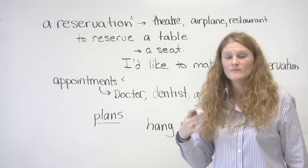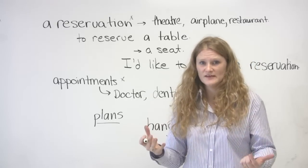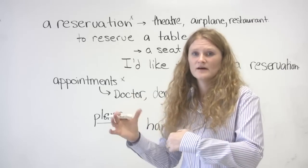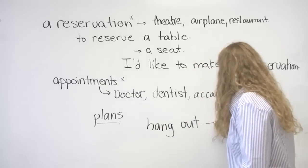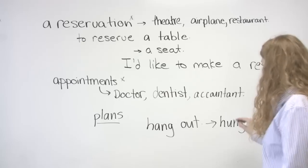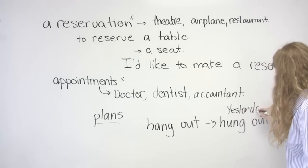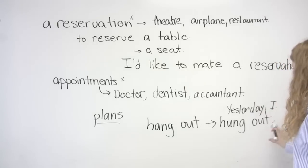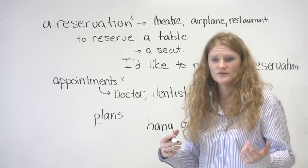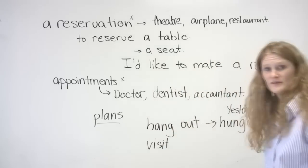Hang out is a very modern word. If you're an older person, for example, like my mother, she would say 'visit.' She would say, 'I went to visit my best friend.' I would say, 'I hung out with my best friend.' That is the past tense. So I can say, 'Yesterday, I hung out.' Or if you'd like to use more formal language, you can say 'visit.' In the past tense, that would be 'visited.'